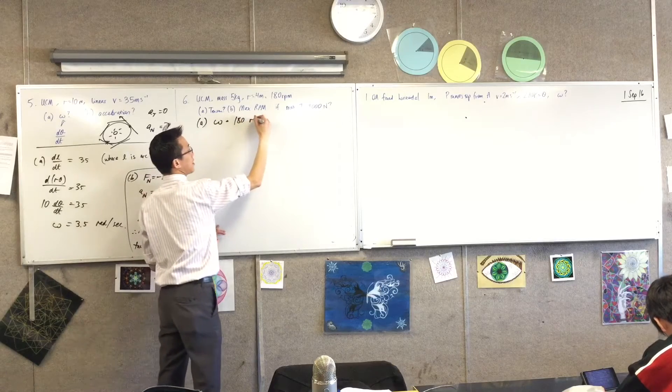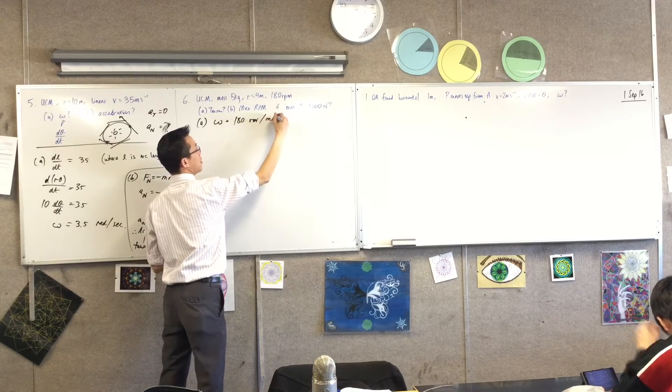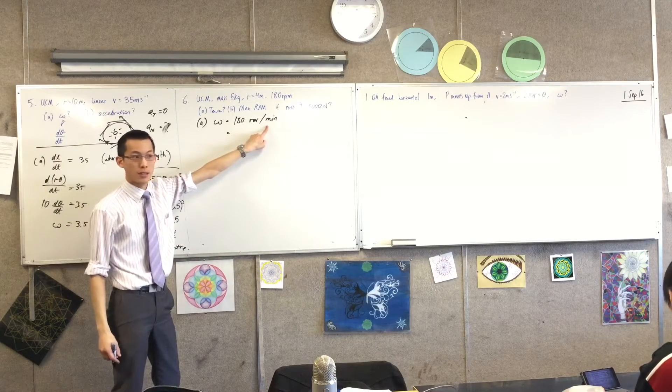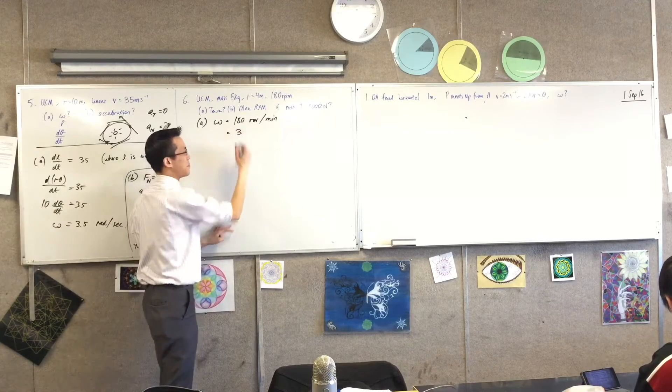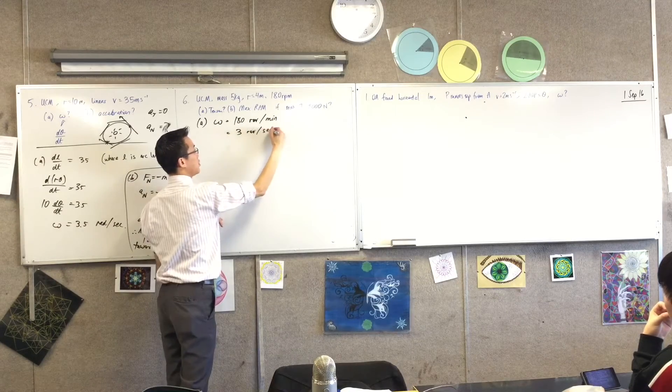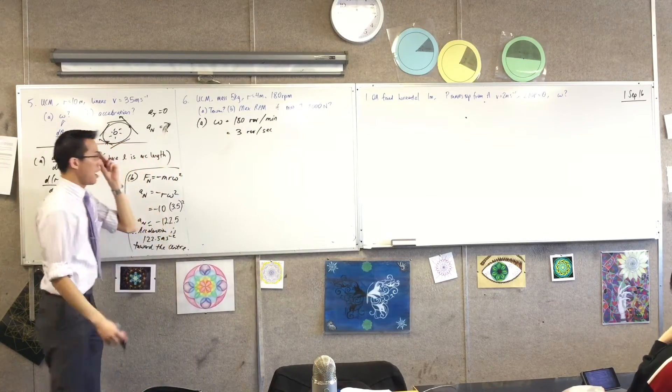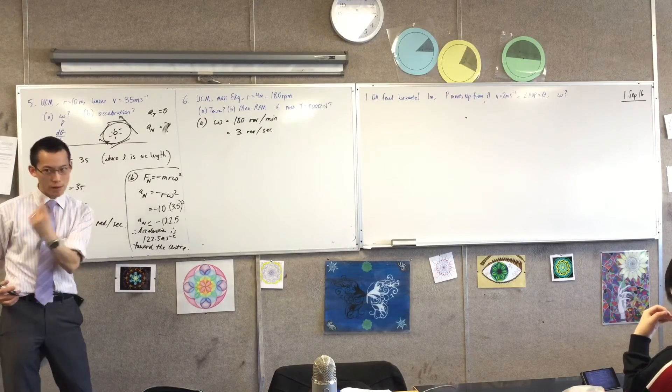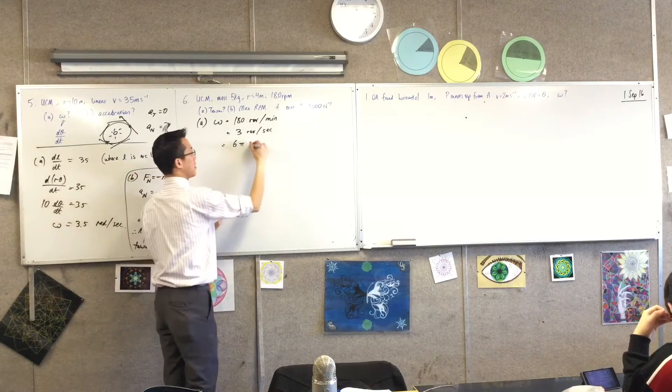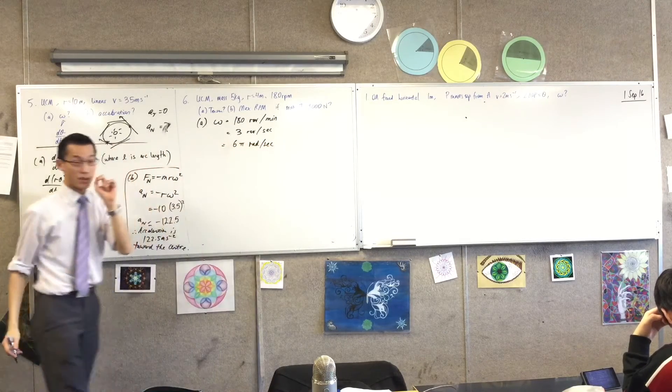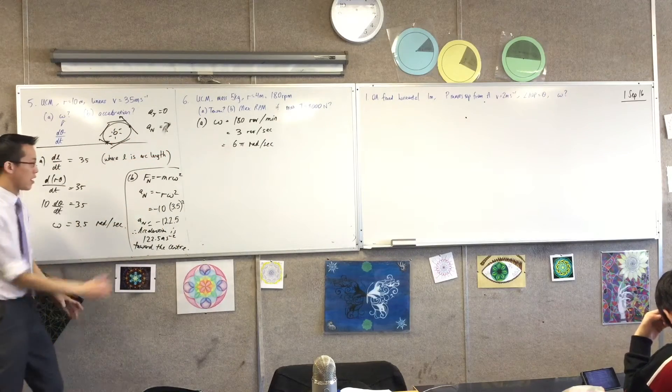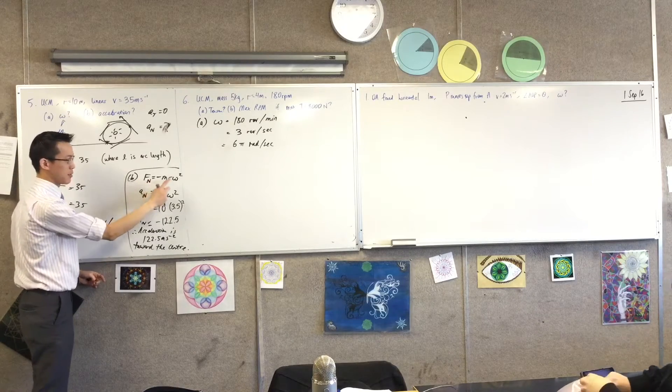Angular velocity: 180 revolutions per minute. So that means every second - this is 60 seconds after all - how many revolutions am I doing? Three. This is 60 seconds, so I divide both of my units by 60. That gives me three revolutions per second. That's pretty fast. I need this in radians now. How many radians is one revolution? Two pi.